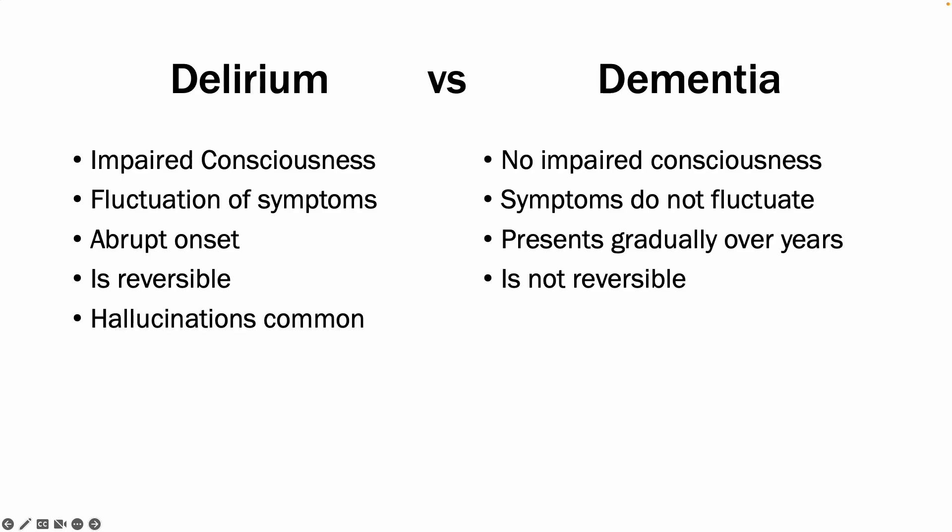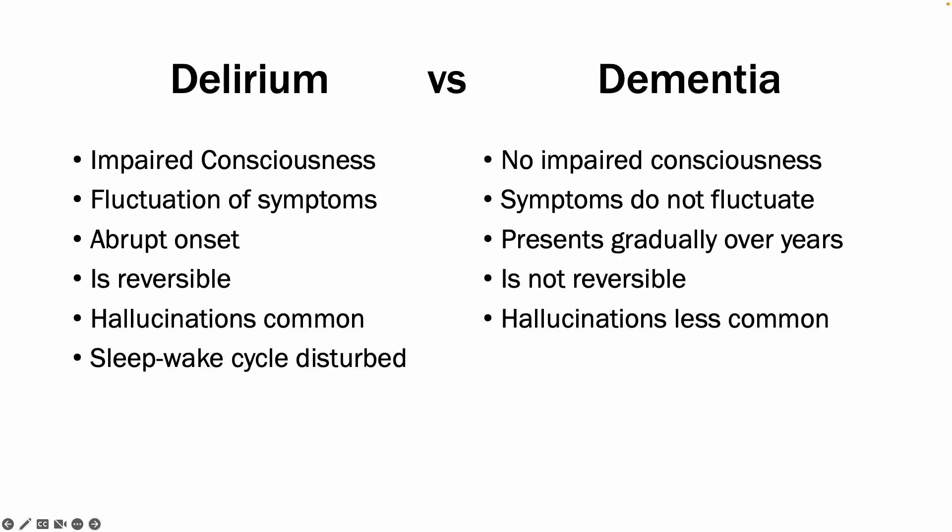Hallucinations are much more common in delirium and less common in dementia, but they can still be present in dementia — especially in patients with Lewy body dementia, so it is something to still be aware of. Similarly, the sleep-wake cycle is severely disturbed in delirium and usually normal in dementia, but patients with Lewy body dementia can also have disturbances in their sleep-wake cycle.